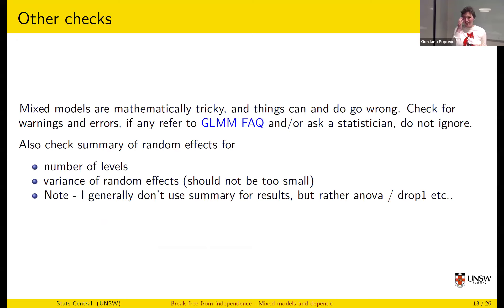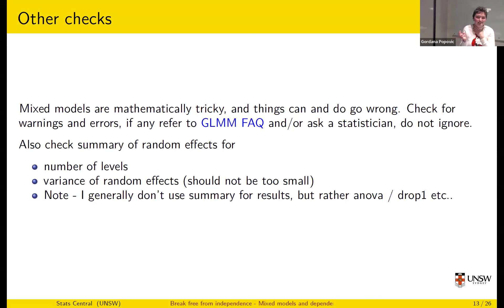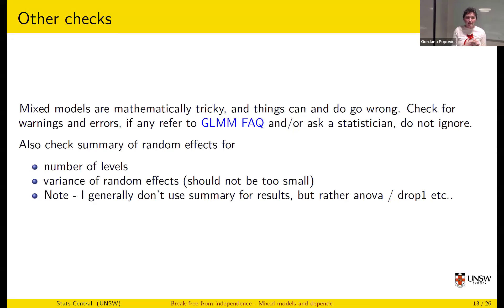Mixed models are actually quite tricky mathematically, even if the packages make it look simple, and things go wrong quite often. If you get a warning or an error, you need to pay attention to that and figure out what to do. If you like to figure things out yourself, have a look at the glmmTMB frequently asked questions — it has all the common issues. Sometimes a warning is fine, but most of the time it's something you need to address. I also tend to check the summary for a couple of things just to make sure everything is what I expect.